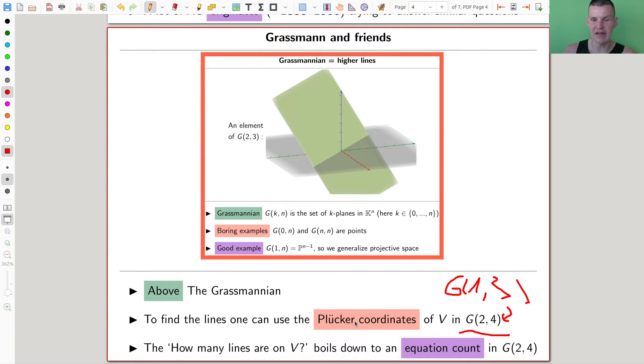So essentially, it boils down to an equation count in the Grassmannian, and because the Grassmannian is something like a 2-by-4 matrix, and that's what it is, 2-by-4 matrix, that's G(2,4), and you can just count the number of equations, and count the number of variables, and it matches up perfectly, so you expect a finite number of solutions, and you get this fantastic answer of 27 solutions to the problem, which is like ridiculous, just really fantastic, and people thought about it, and developed the Grassmannian.